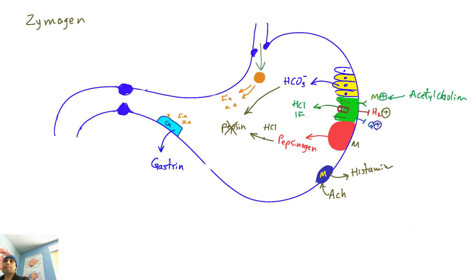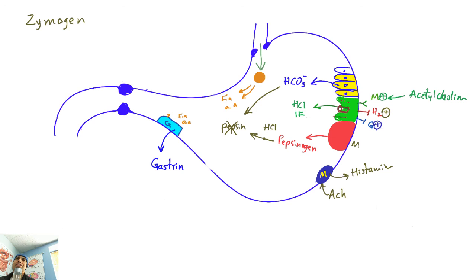The energy for this process comes from the same source as every other cell — glycolysis and the Krebs cycle. The stomach gets its glucose via its own blood supply, not directly from the stomach lumen. After break, we'll come back to medications — one of them is atropine. Let's take a break.